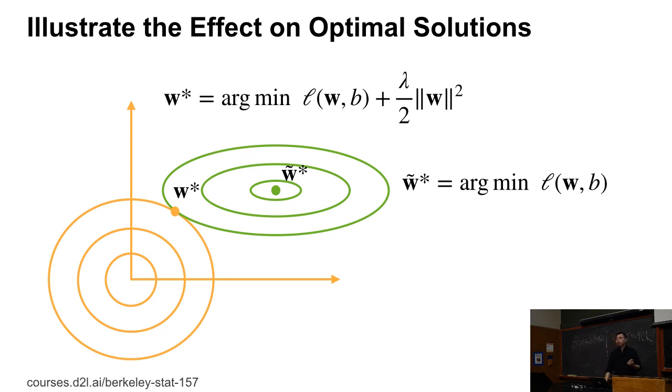Because of the L2 norm, we drive the W̃* towards the origin. So if you have a larger λ, this force is bigger. If you have a small λ, then we define the position closer to the W̃*.